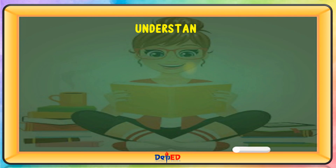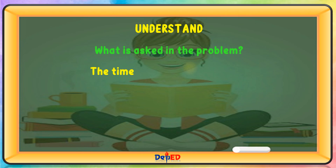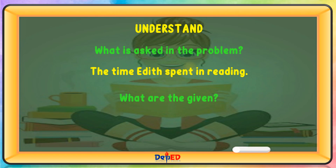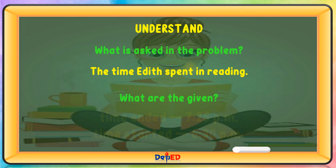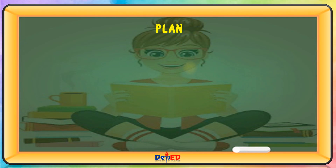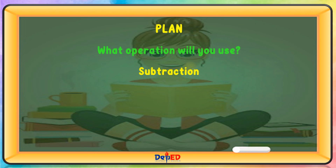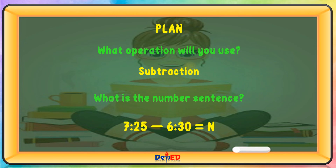First is to understand. What is asked in the problem? The time Edith spent in reading. What are the given? Time ended: 7:25 p.m. Time started: 6:30 p.m. Second is to plan. What operation will you use? Subtraction. What is the number sentence? 7:25 minus 6:30 equals?